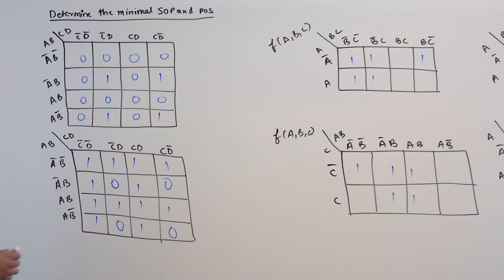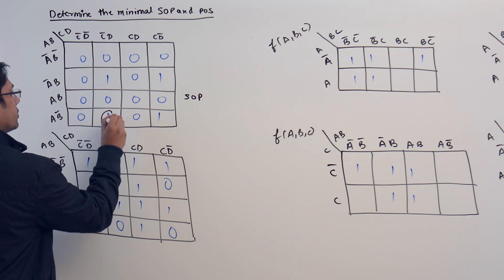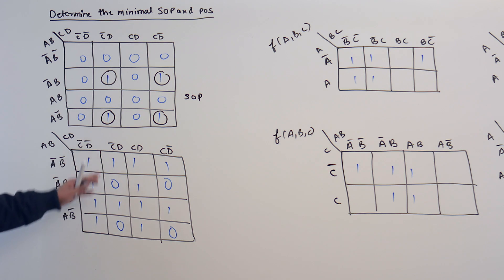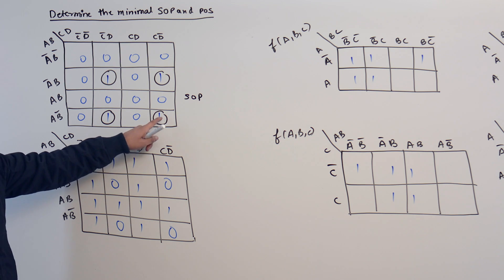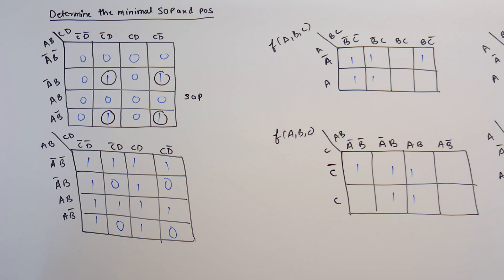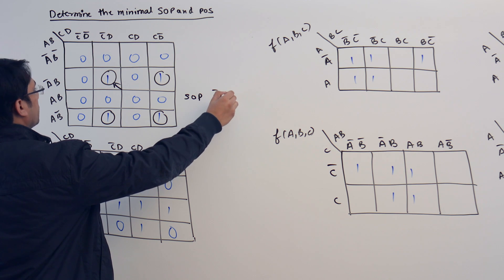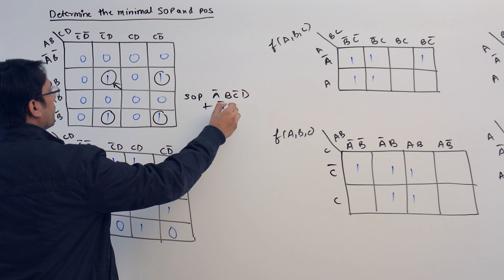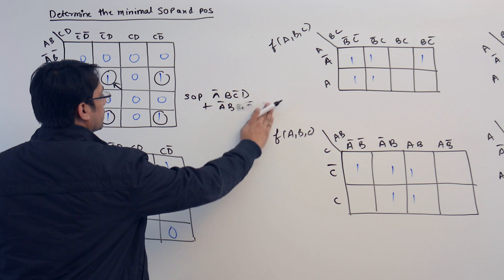For the first K-map, if I am trying to find the SOP, that means we are going to take all the one terms. Here, we will not be able to make a bigger subcube which is having more than one cell, so we have to include all these cells individually. The first one is denoting A'B C'D, plus this one is denoting A'B CD'.